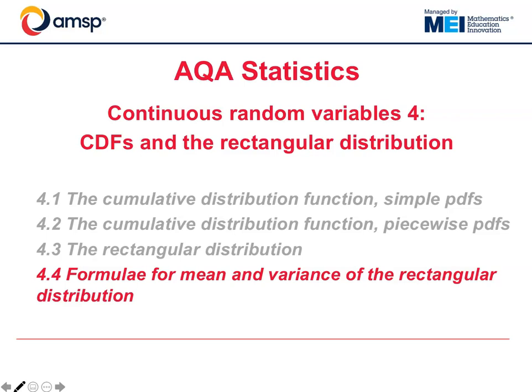This is AQA Statistics, Continuous Random Variables 4. This video is about deriving the formulae for the mean and variance of the rectangular distribution.